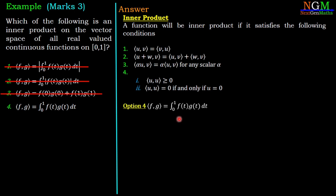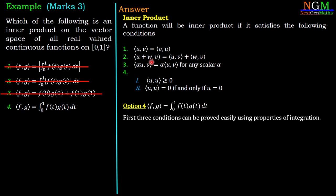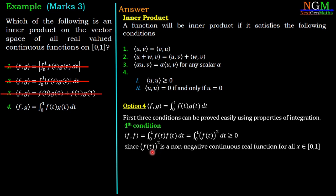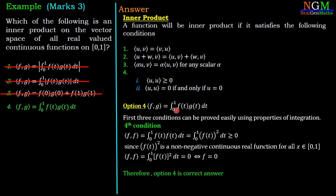For option 4, ⟨f,g⟩ = ∫₀¹ f(t)g(t)dt. This satisfies the first three conditions because they are standard properties of integration. For condition 4: ⟨f,f⟩ = ∫₀¹ [f(t)]² dt ≥ 0, since [f(t)]² is a non-negative continuous real-valued function on [0,1]. Furthermore, ∫₀¹ [f(t)]² dt = 0 if and only if f = 0. Therefore option 4 satisfies all four conditions and is indeed an inner product. Option 4 is the correct answer.